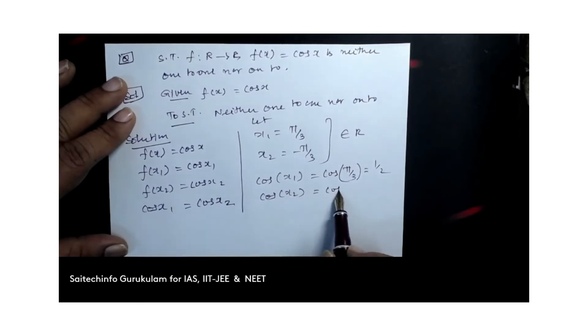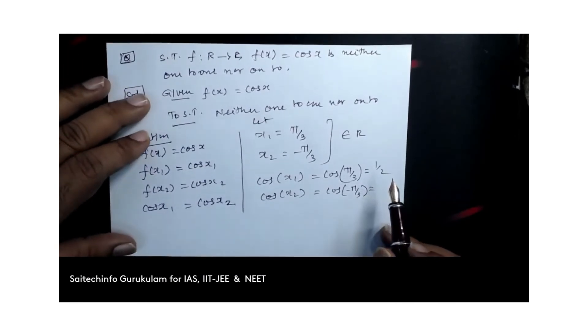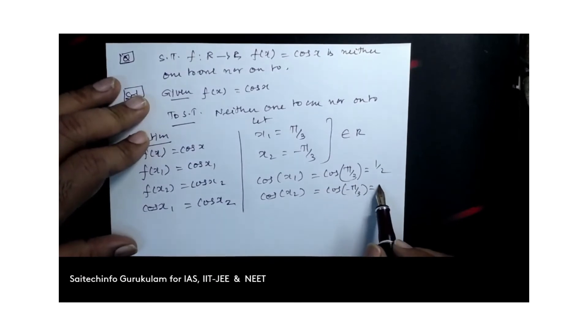Cos of x2 equals cos of minus π by 3. So we know cos of minus x equals cos x. So cos of minus π by 3 equals cos π by 3. That is also 1 by 2.